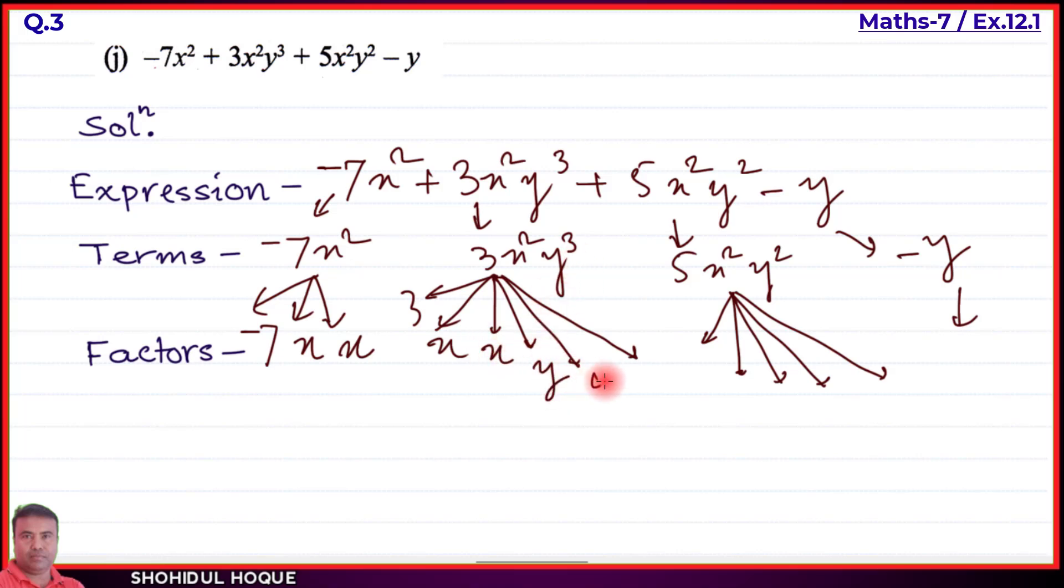The third term 5x²y² has factors 5, x, x, y, and y. The fourth term -y has factor -1 and y. This completes Question 4. Thank you for watching.